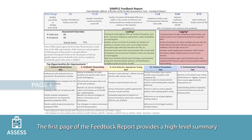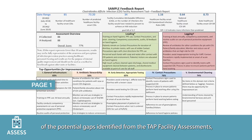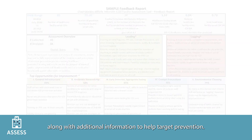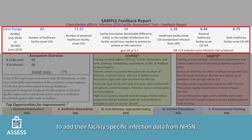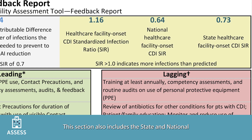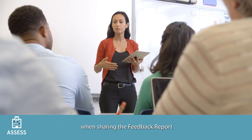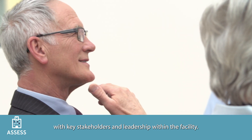The first page of the feedback report provides a high-level summary of the potential gaps identified from the TAP facility assessments, along with additional information to help target prevention. At the top of the first page, facilities have the option to add their facility-specific infection data from NHSN. This section also includes the state and national standardized infection ratios, or SIRs, for the relevant HAI. This information can be helpful to frame the discussion when sharing the feedback report with key stakeholders and leadership within the facility.